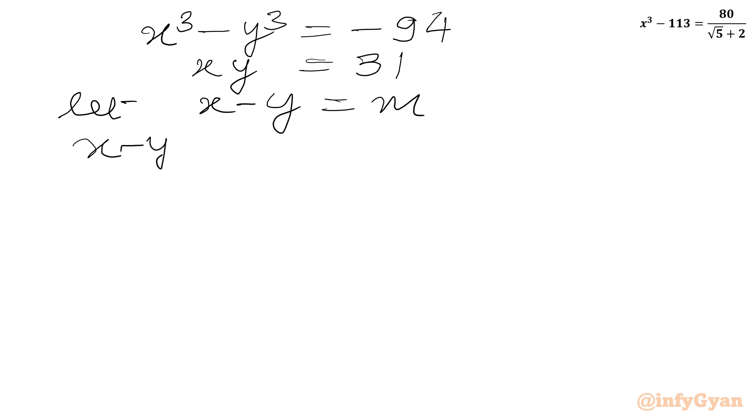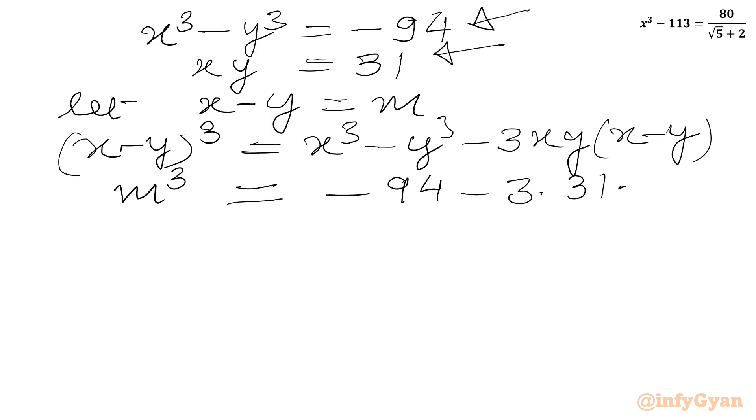And I will use x minus y whole cube formula which is x cube minus y cube minus 3xy times x minus y. I will write LHS M cube equal to x cube minus y cube. This is minus 94. Minus 3 times xy this is 31, times x minus y this is M. So I can write M cube equal to minus 94 minus 93 M. Or we can write m cube plus 93m plus 94 equal to 0.